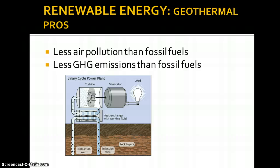The pros of using geothermal: there are far less air pollutants emitted than from fossil fuels. You do require pumps, so there is some electricity being used — and right now more than half of our electricity comes from burning coal, so there are some indirect emissions, but not direct ones. There are a lot less greenhouse gas emissions than fossil fuels emit. For the geyser-type setup: water comes in, turns to steam, turns the turbine, connected to a generator, and generates electricity.